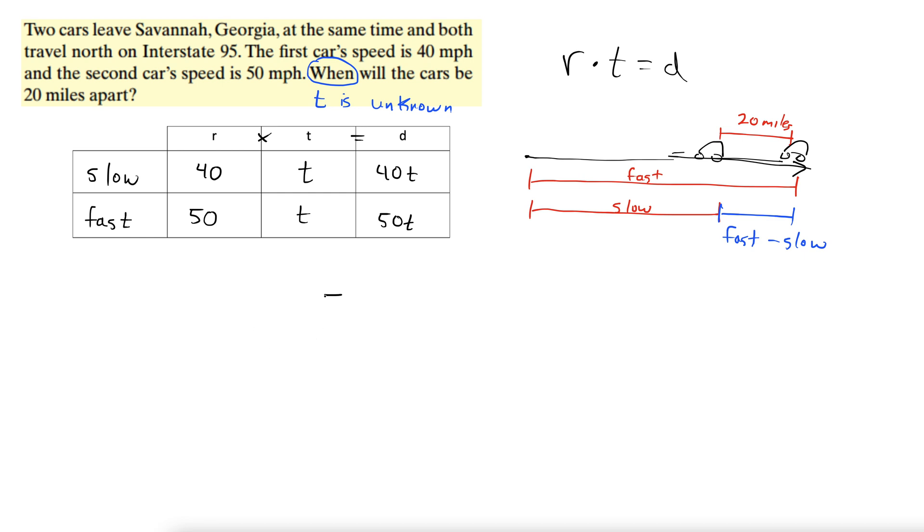Okay, so we have 50t minus 40t. And the distance we're looking for is 20 miles.